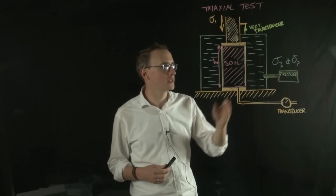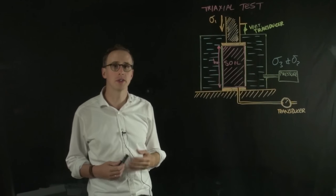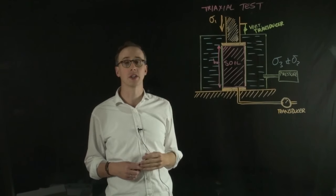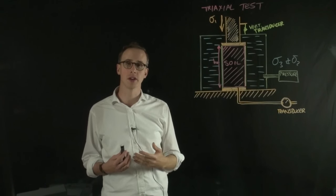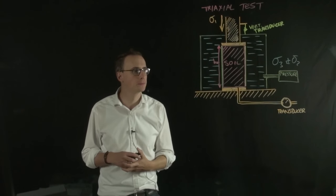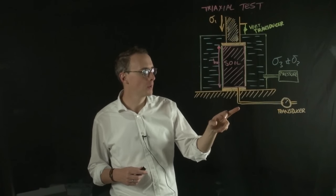What usually happens in a triaxial test is we'll keep sigma-3 and sigma-2, or the water pressure constant, and increase the axial stress until we get failure.